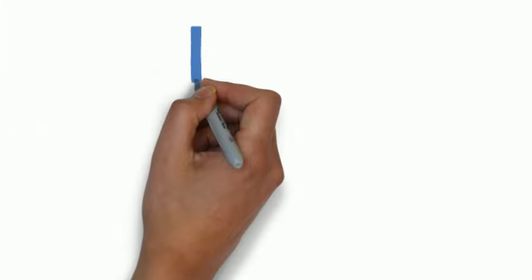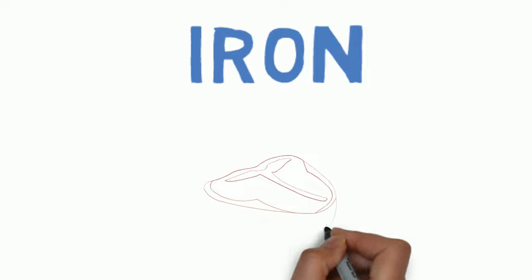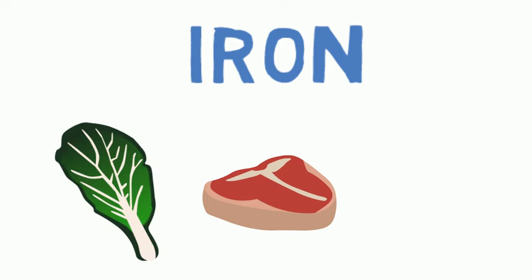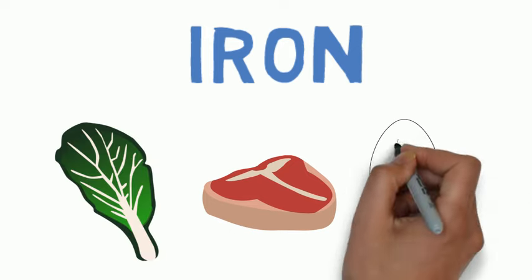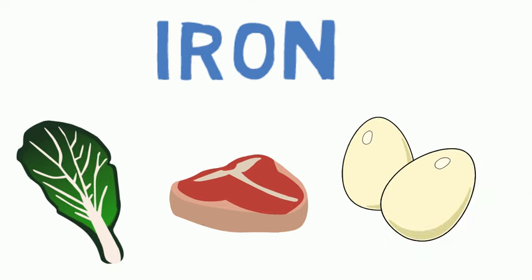Iron. Iron is important to make healthy red blood cells. They carry oxygen to all parts of your body. Iron helps you have energy. A lack of iron can cause anemia or a low hemoglobin level. Iron is in red meats, dried beans, eggs, salmon, tuna, spinach, and dark leafy greens.